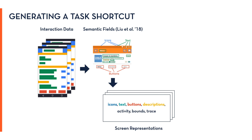A screen representation contains icons, buttons, and the text fields on the original screen. We also found that including app descriptions from the Google Play Store provides better matches. In addition, these representations include programmatic references — the Android activities — which can be used to directly launch an app at a specific UI state. There is also a pointer to the interaction trace leading up to the screen, which is used when a screen cannot be launched directly.